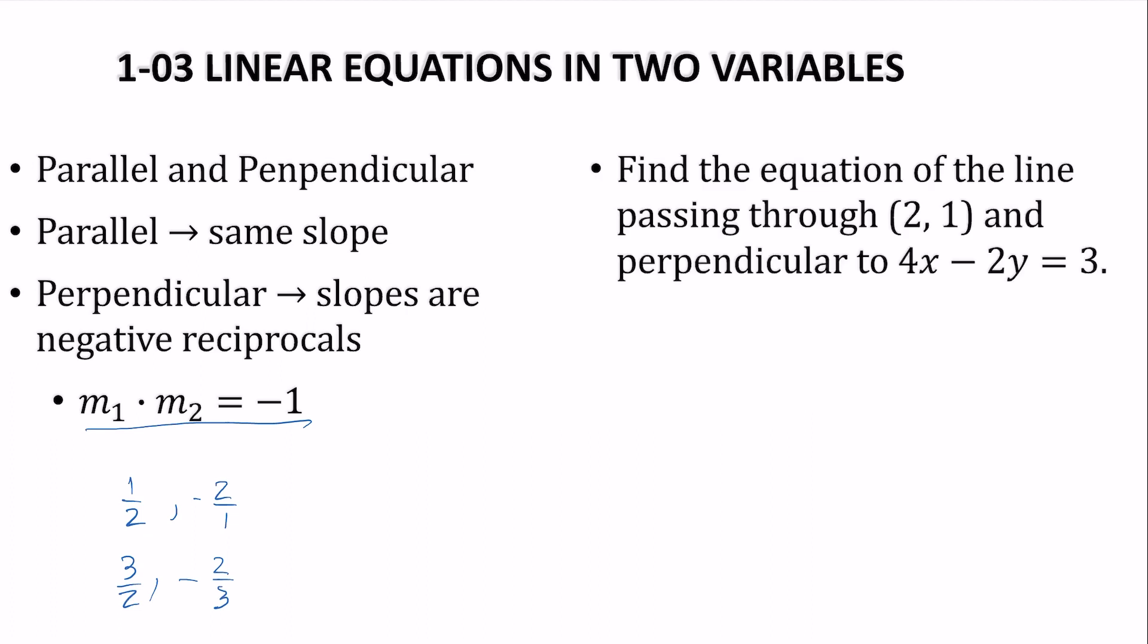So let's find the equation of the line passing through this point and perpendicular to this line. Well, first thing we need is a slope, so we can get it from our line. So let's take our line that we're going to be perpendicular to and find its slope.